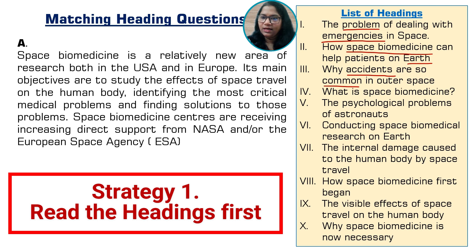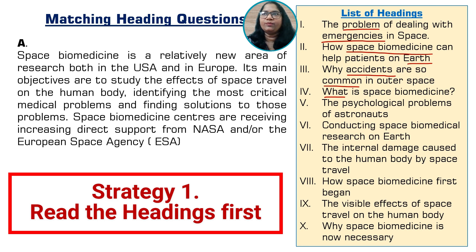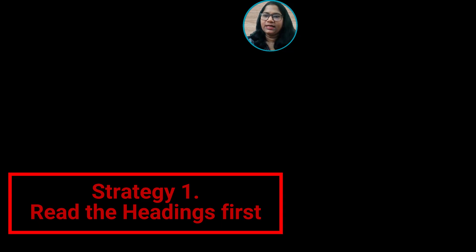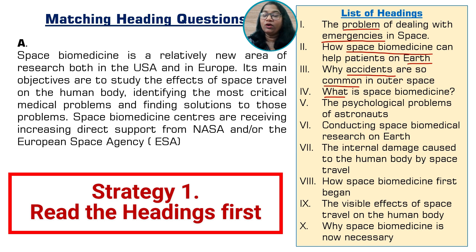WH-questions — how, why, what, when — are very important words that help us understand the precise meaning of a heading. For example, 'What is space biomedicine?' is asking for a descriptive answer — a definition of space biomedicine. We may match this with a paragraph that defines space biomedicine. As we underline keywords and paraphrase in our mind, we build a good understanding and expectation of what we're going to face in the passage.